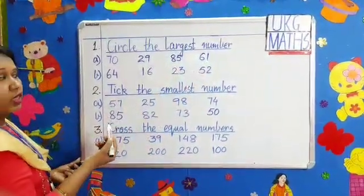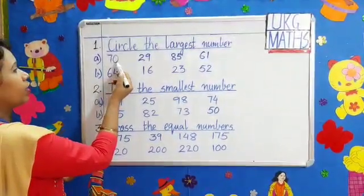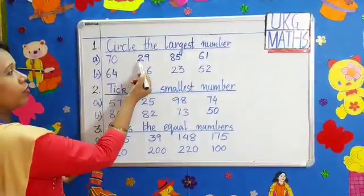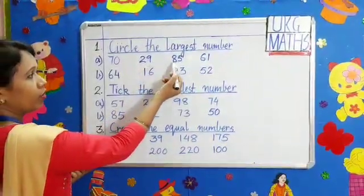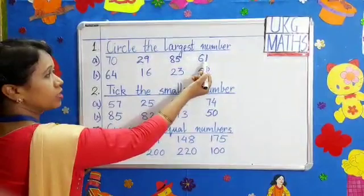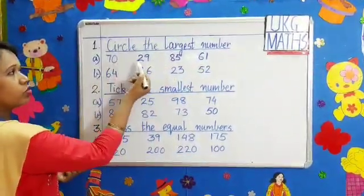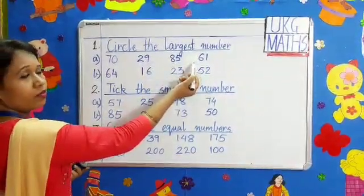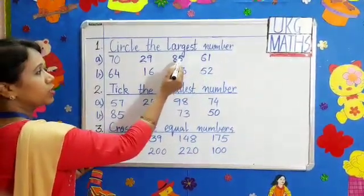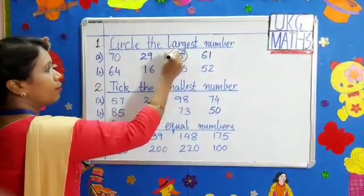We have to see the first digit in each number. Here we have 7 in 70, 2 in 29, 8 in 85, and 6 in 61. So which is the largest number? 7, 2, 8, 6. Very good. 8, that means 85. We will circle 85. 85 is the largest number.